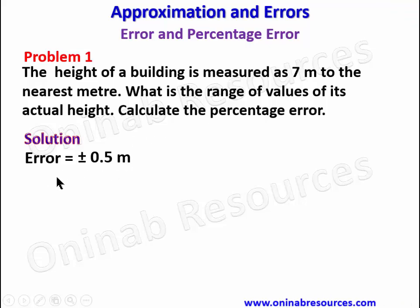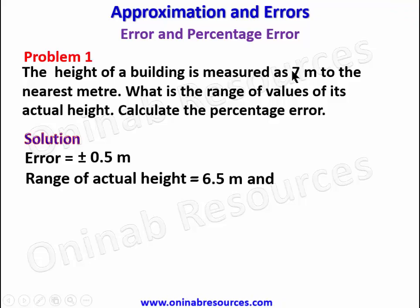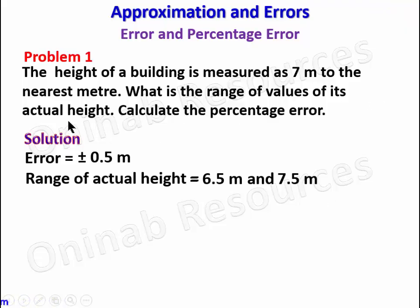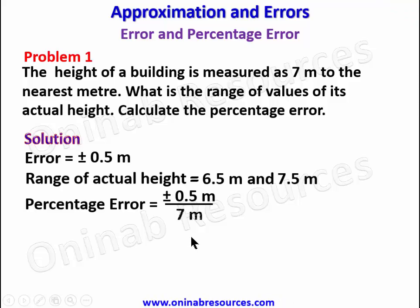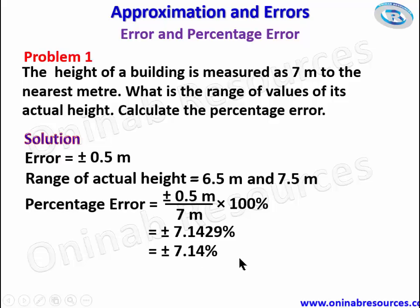From here we get our range of actual height of the building. It's seven meters plus or minus 0.5: seven minus 0.5 gives 6.5 meters, and seven plus 0.5 gives 7.5 meters — that answers the first part. For the percentage error, it is the error (0.5) over the given value (7), multiplied by 100 percent, which gives plus or minus 7.149 percent, or plus or minus 7.14 percent to three significant figures. That is the end of the solution to problem one.